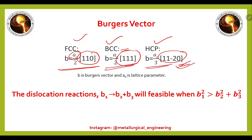For a dislocation reaction where a high-energy dislocation b₁ breaks into two Burgers vectors b₂ and b₃, the reaction is feasible only when b₁² > b₂² + b₃².